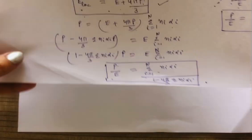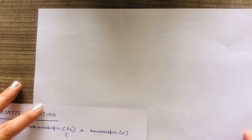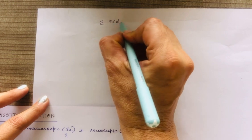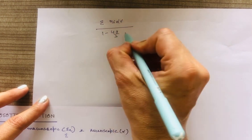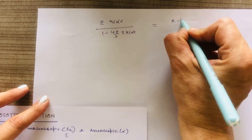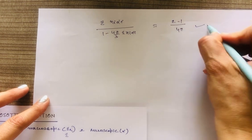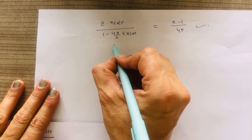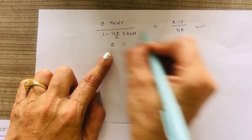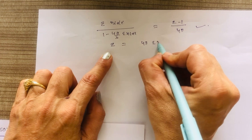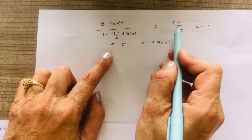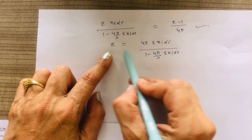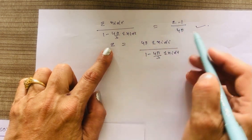Equating both expressions for P/E, we get: Σ N_i α_i / [1 − (4π/3) Σ N_i α_i] = (epsilon − 1) / 4π. From this relation, we can find the value of epsilon. Solving, epsilon = 4π Σ N_i α_i / [1 − (4π/3) Σ N_i α_i] + 1.